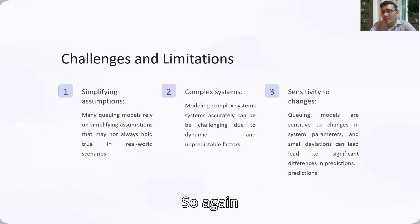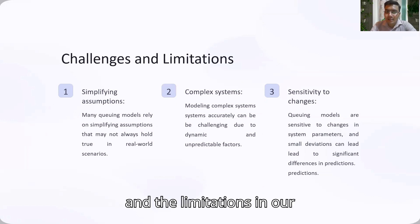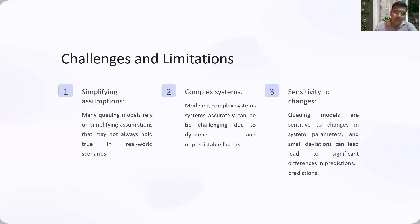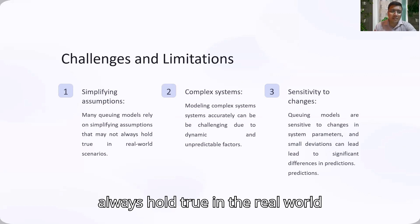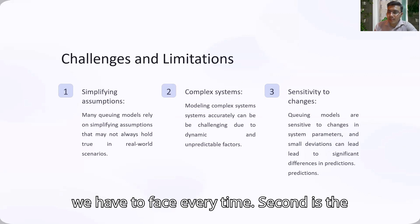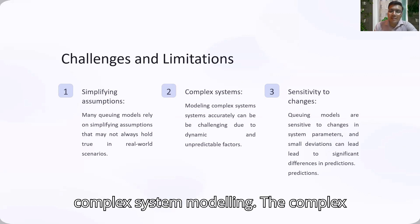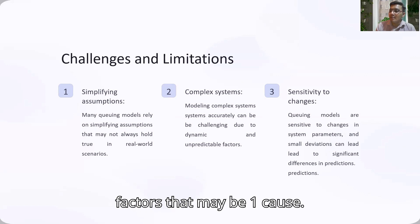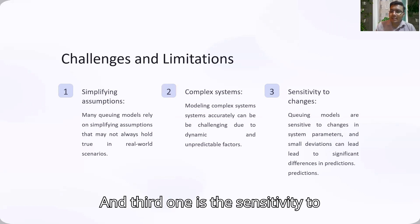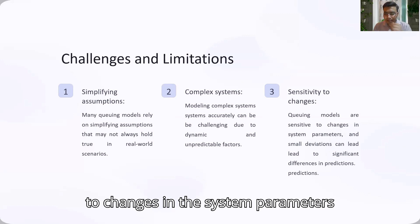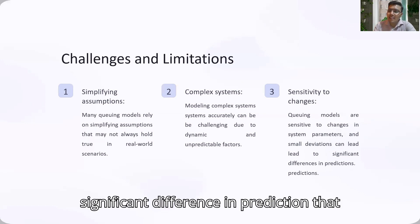There are several challenges and limitations in queuing models. The first is simplifying assumptions — many queuing models rely on simplified assumptions that may not always hold true in real-world problems. The second is complex system modeling — accurately modeling complex systems can be challenging due to dynamic and unpredictable factors. The third is sensitivity to changes — queuing models are sensitive to changes in system parameters, and small deviations can lead to significant differences in predictions.